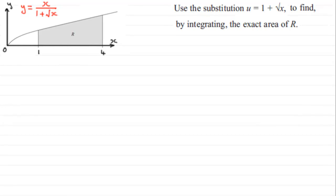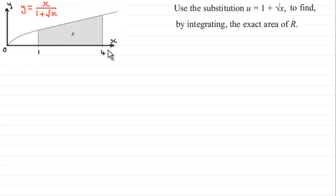What we have here is our graph with equation y equals x divided by 1 plus root x, and we're looking at the region R between x equals 1, x equals 4, the curve, and the x-axis. What we've got to do is use the substitution u equals 1 plus root x to find, by integrating, the exact area of R. Pause the video, give it a go, then come back and check your solution with mine.